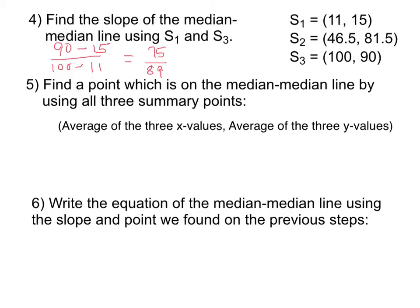To find a point which is on the median-median line, we're going to use all three of the summary points. We're going to do an average of the three x's and an average of the three y's. This point that we get on the median-median line is called the centroid.